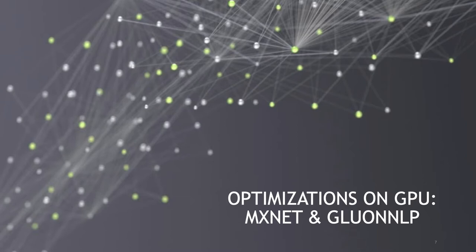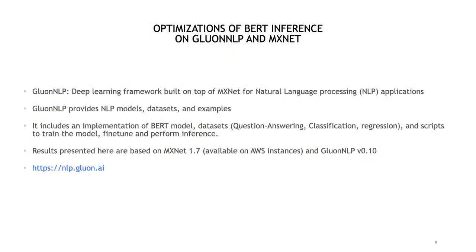Now I'm going to give some details about the optimizations we have implemented on MXNet and GluonNLP for improving the performance of BERT inference on GPUs. For those of you who are not familiar with GluonNLP, it is a deep learning framework for natural language processing, built on top of MXNet. It provides NLP models, datasets, and examples, and it includes an implementation of the BERT model. It also includes datasets and scripts to train the model, to fine-tune it, and to perform inference.